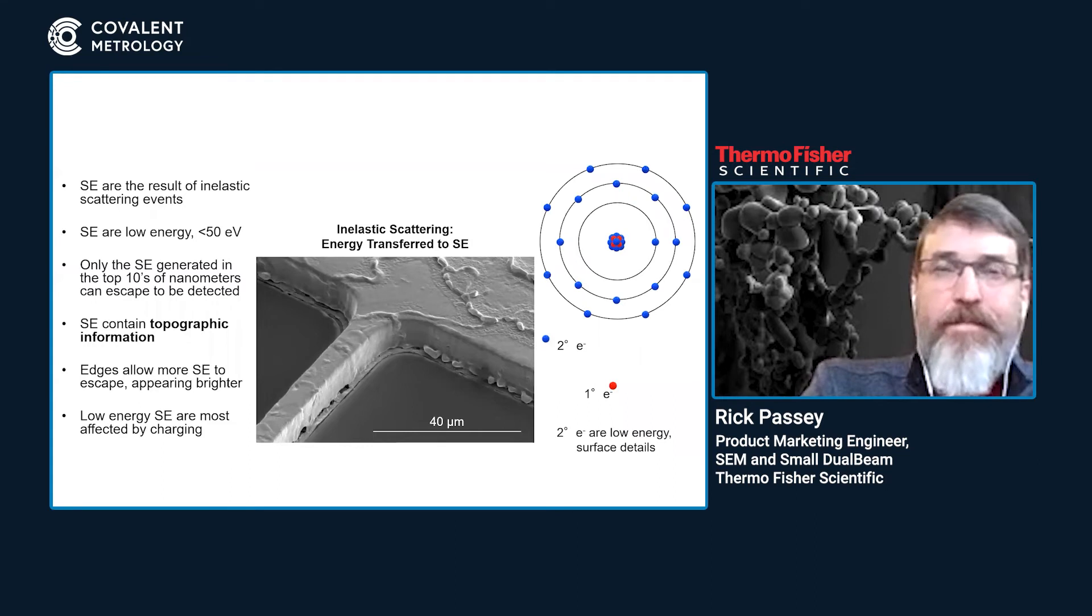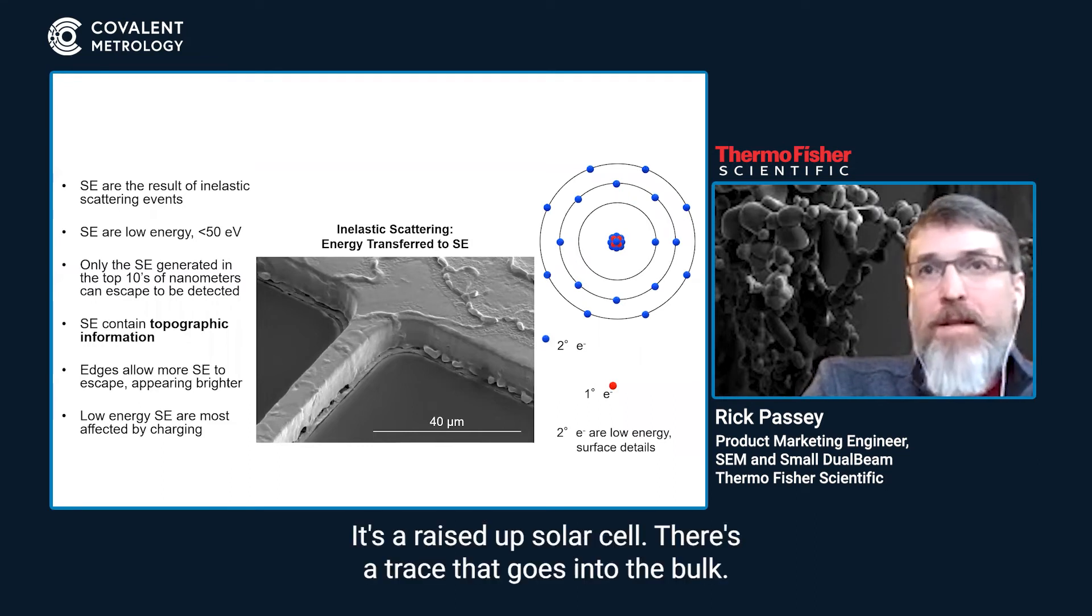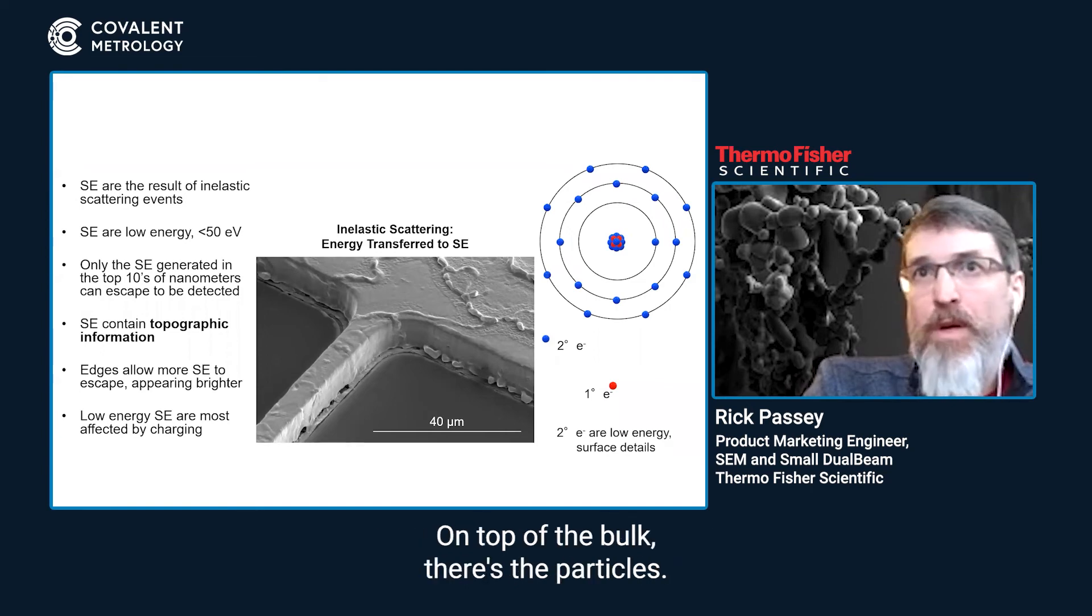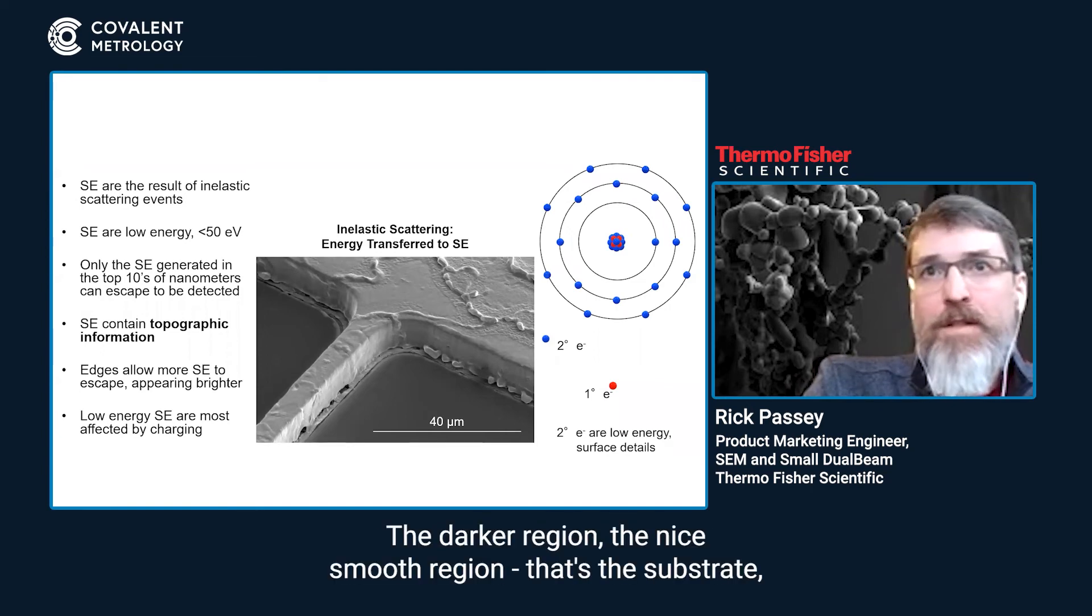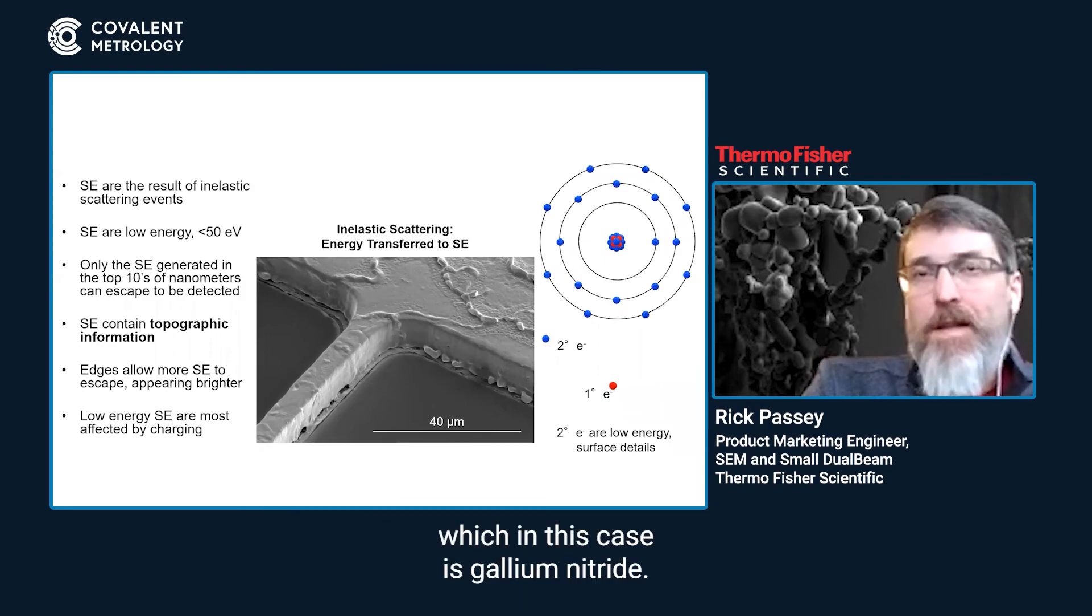It's a raised up solar cell - there's a trace that goes into the bulk. On top of the bulk there's the particles. The darker region, the nice smooth region, that's the substrate, which in this case is gallium nitride.